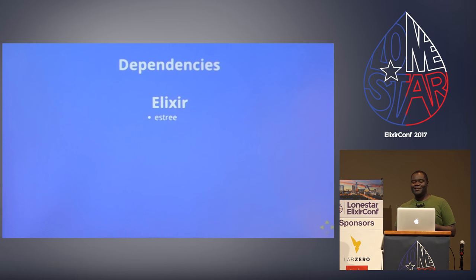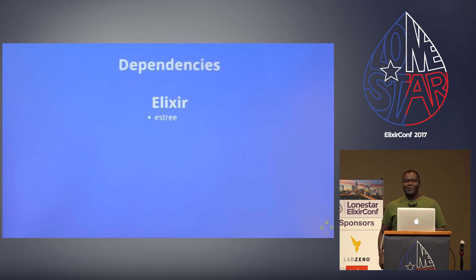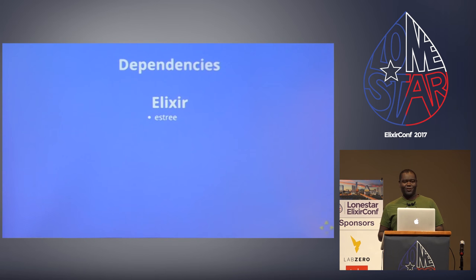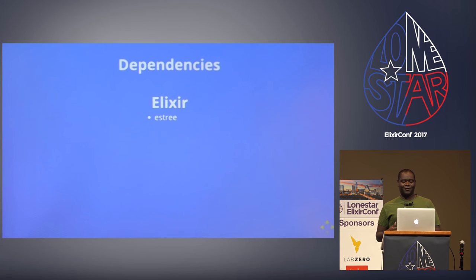What the ES3 module does in Elixir is define structs for each of the JavaScript AST nodes, as well as tools for building up a JavaScript AST and taking that AST and turning it into JavaScript code.